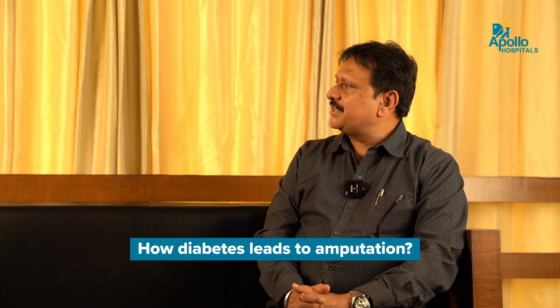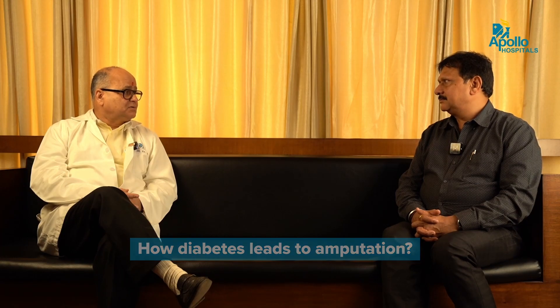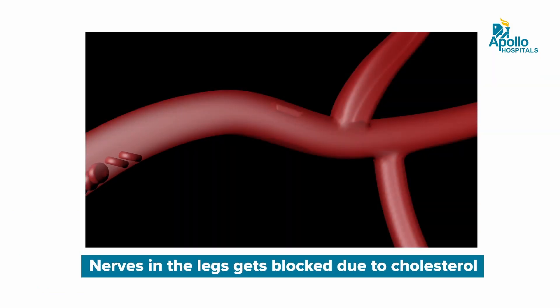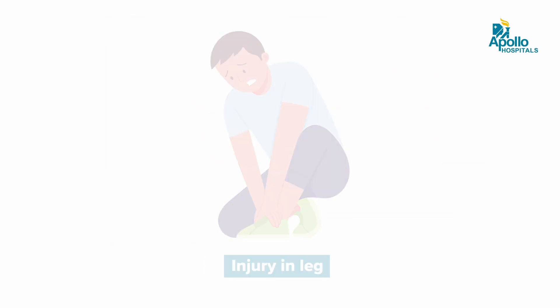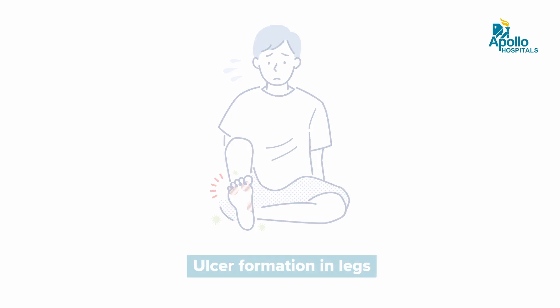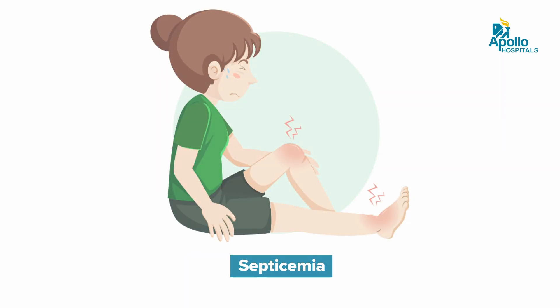Doctor, how does diabetes lead to amputation? Diabetes is the leading cause of lower limb amputation. The arteries which supply the legs get blocked because of cholesterol deposition, and your nerves get affected so you don't feel any sensation. If you have an injury, it leads to ulcer formation, which gets infected and may lead to septicemia, and that may lead to amputation. The two important causes are neuropathy and vascular disease.